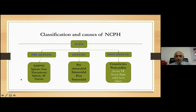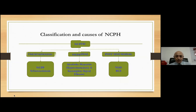Common pre-hepatic causes include extra-hepatic portal vein obstruction, splenic vein thrombosis, and splenic arteriovenous fistula. The typical hepatic causes include pre-sinusoidal and post-sinusoidal portal hypertension. Subsequently you have post-hepatic causes — obstruction of the outflow tract of the liver beyond hepatic veins — which is typically right-sided heart failure, constrictive pericarditis, or severe tricuspid regurgitation.